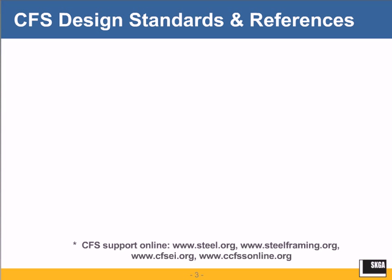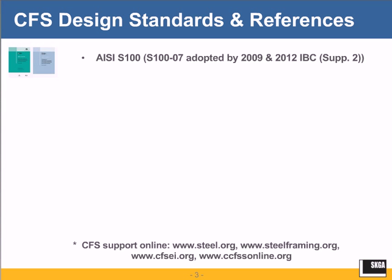To begin with, one of the standards we should have in our library is the North American Specification for Cold-Formed Steel Design of Members, which is AISI S100. It was formerly known as the NASPAC. Now it's AISI S100-07, which was adopted by the 2009 IBC. The Supplement 2 that goes along with AISI S100-07 is adopted by the 2012 IBC.